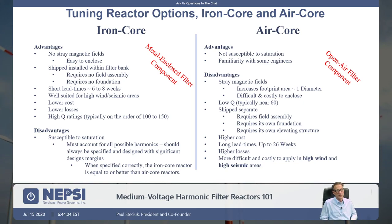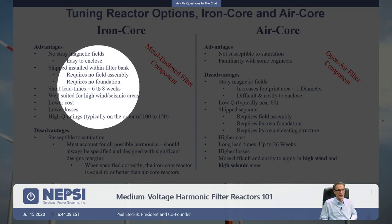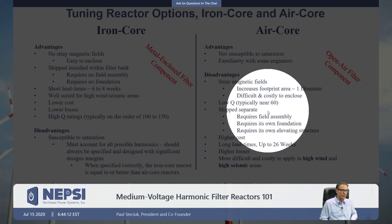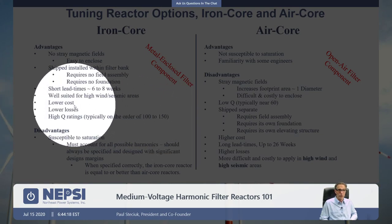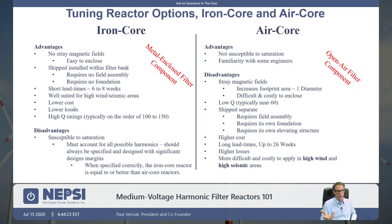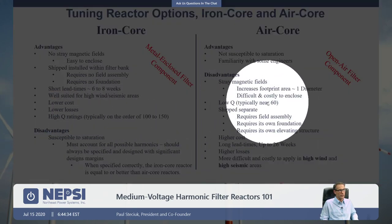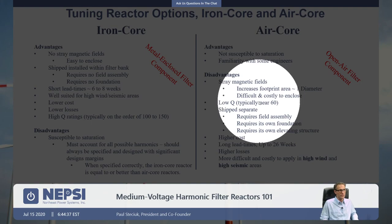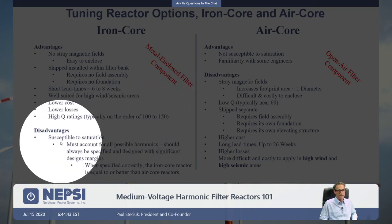Iron core reactors typically have short lead times of six to eight weeks, whereas air core reactors have much longer lead times — up to 26 weeks. Iron core reactors have lower cost and lower losses. The losses of an iron core reactor are based on the I²R or X-over-R ratio. X-over-R for iron core is about 100, while for air core it's about 60. This is a common misconception — people think iron core has higher losses, but since X-over-R is higher, I²R losses are actually lower.